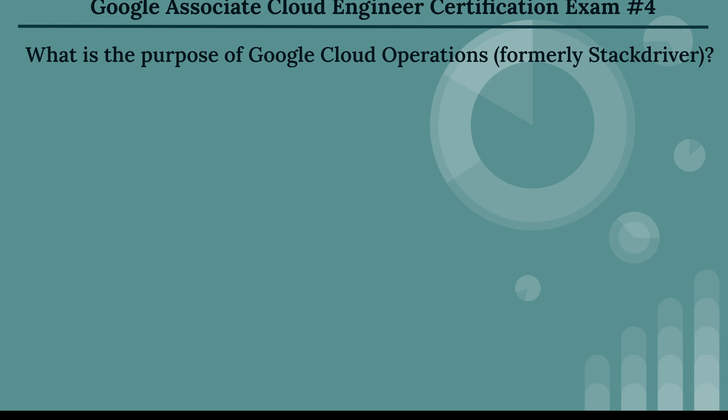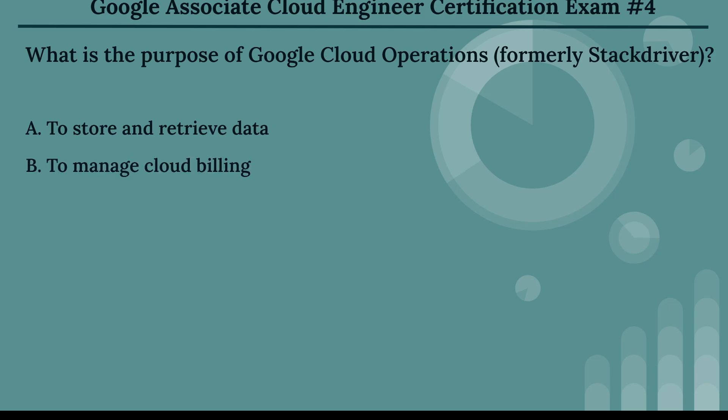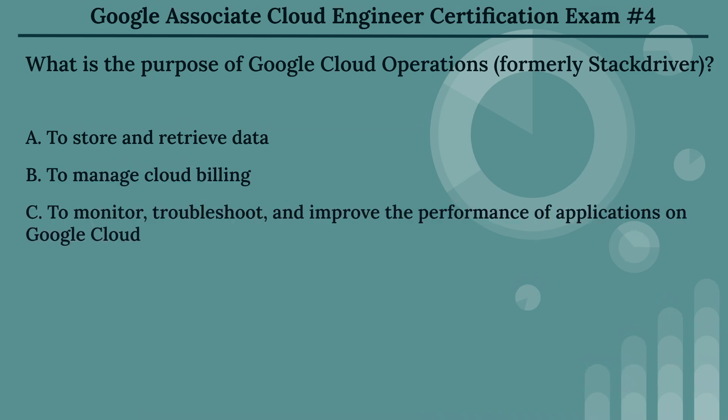The fourth question: what is the purpose of Google Cloud Operations, formerly Stackdriver? The options are: Option A, to store and retrieve data. Option B, to manage cloud billing. Option C, to monitor, troubleshoot, and improve the performance of applications on Google Cloud. Option D, to deploy machine learning models.